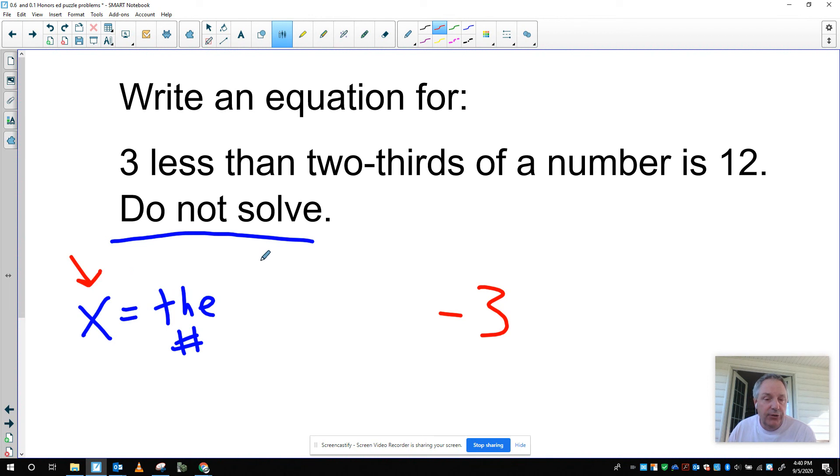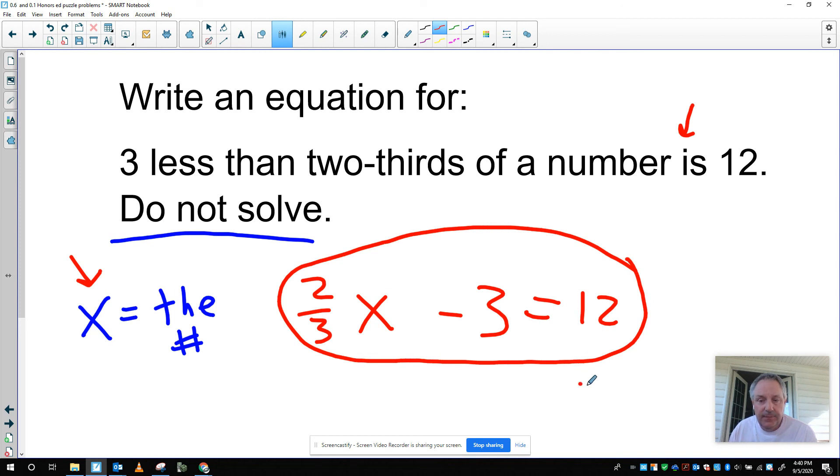If X is my number, 2 thirds of that tells me to do 2 thirds times that number. So here's 3 less than 2 thirds the number is, is tells me to write my equal sign. So is 12. There is my equation. Hope this helps. Have a great day.